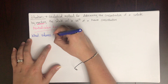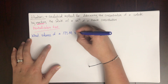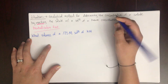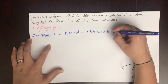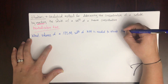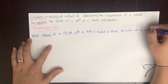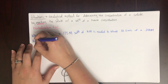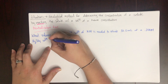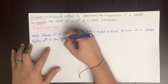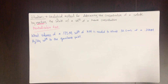Here's what a titration problem looks like: What volume of a 0.175 molar solution of potassium hydroxide is needed to titrate 30.0 milliliters of a 0.200 molar sulfuric acid (H₂SO₄) solution? There's a lot here, so let's go through it piece by piece.